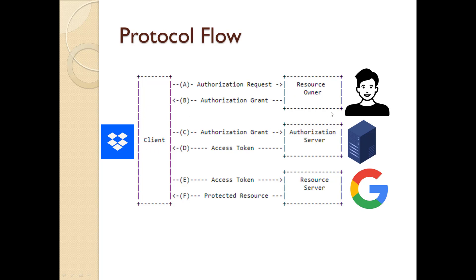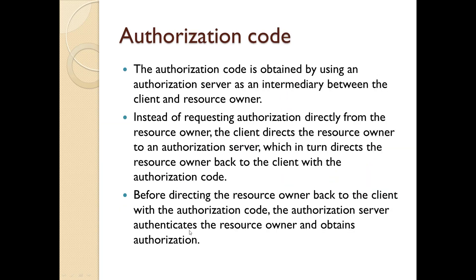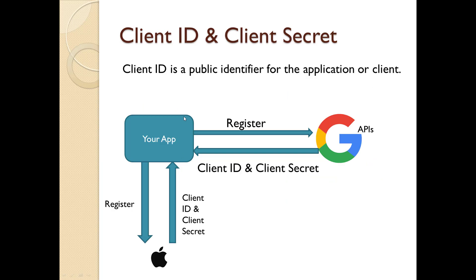It's not a direct process where the client simply navigates the resource owner to the authorization server. First, the client needs to register with Google, GitHub, Facebook, Instagram — whatever login options they want to provide — and get a separate client ID and client secret for each. Client ID and client secret used for Google will not be the same as those for GitHub or Apple. In step A, the client needs to have a client ID and client secret.